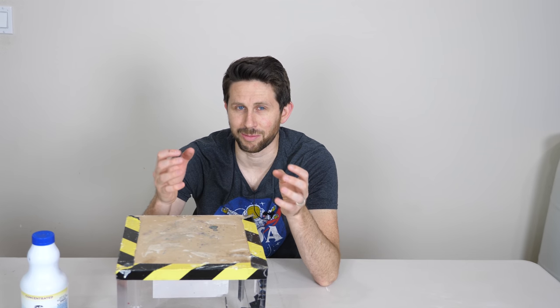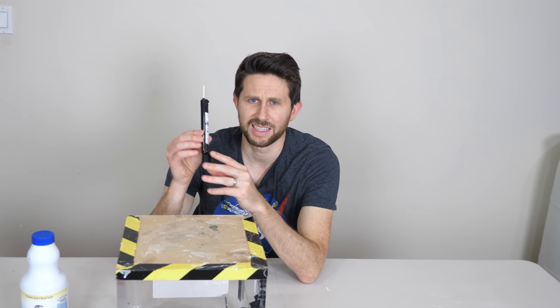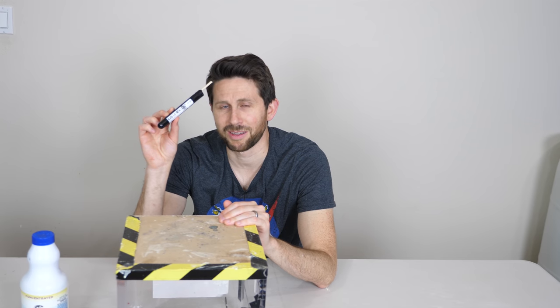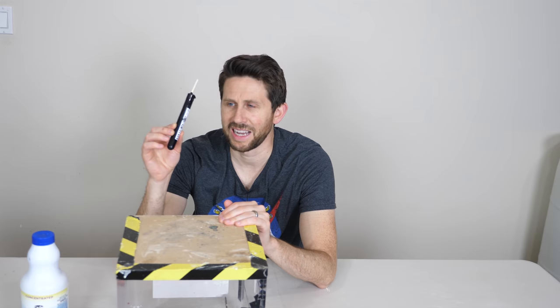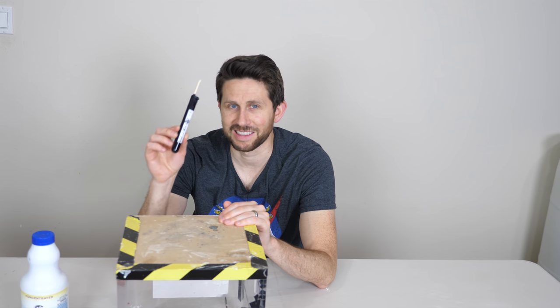And you know that if you pour bleach in Coke, it turns the Coke pretty clear. So the question is what happens when you pour bleach on Black 3.0, the world's blackest black? Will it actually turn it white or even clear? There's only one way to find out.